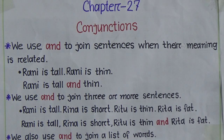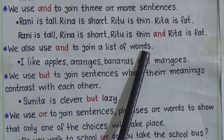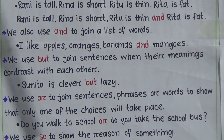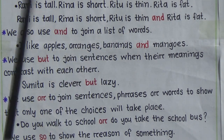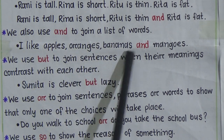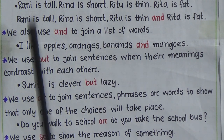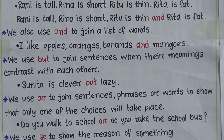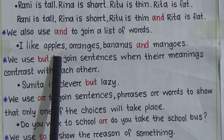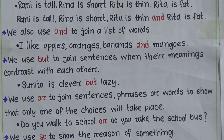Number three: we also use 'and' to join a list of words. For example: 'I like apples, oranges, bananas, and mangoes.' We could say 'I like apples', 'I like oranges', 'I like bananas', 'I like mangoes' as separate sentences, but we join all the words together using 'and' to make one sentence.